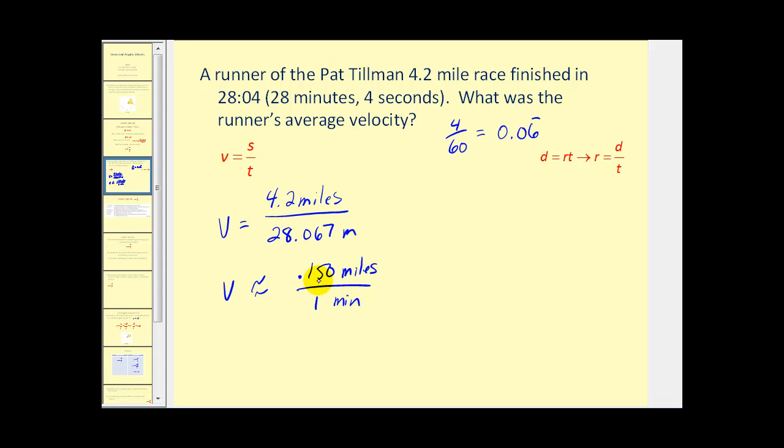Approximately 0.150 miles per minute. This is our correct answer, but let's convert this to miles per hour. To convert minutes into hours, we know there are sixty minutes in one hour. If we multiply across the top, we're going to have 8.979 miles over one hour, which is normally written as 8.979 miles per hour.